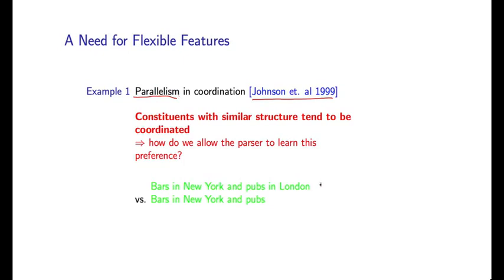And this is essentially the following. So if I look at these two phrases, I have bars in New York and pubs in London. The second phrase, I have bars in New York and pubs. This one has an instance of parallelism, and that's because bars in New York has a very similar structure, syntactically speaking, to pubs in London. So I have two things being coordinated here which have basically similar structures.